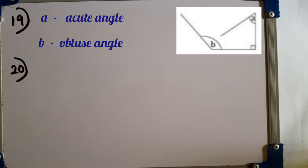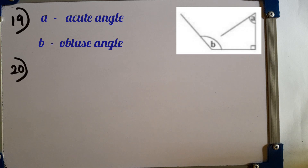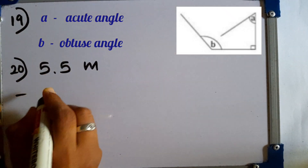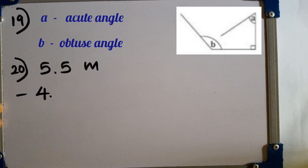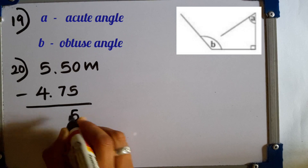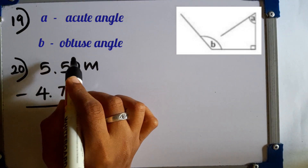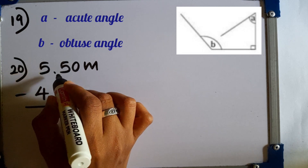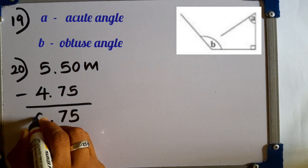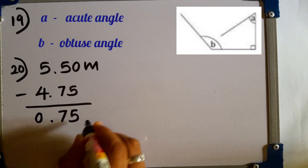Question number 20: mother bought 5.5 meters of fabric. If 4.75 meters was used, find the length of the remaining fabric. We subtract 4.75 from 5.5. Put a zero to get 5.50. 10 minus 5 is 5, carry. 14 minus 7 is 7, then 0. The answer is 0.75 meters.